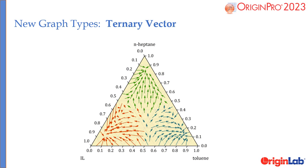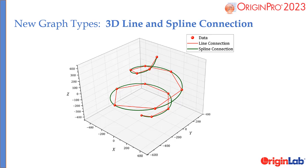Improvements to contour plots, improvements to exports, improvements to LabTalk scripting. Several graph types have been added: ternary vector, 3D line and spline connection.